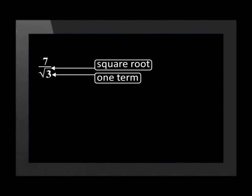Here we have 7 over the square root of 3. So there is one term at the bottom with the square root.